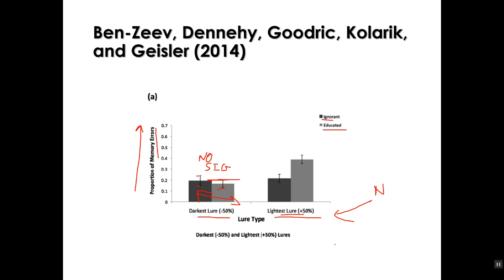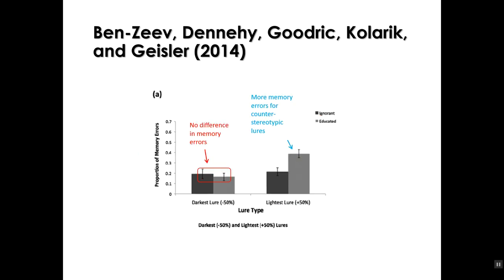However, for the lightest lures, we see that yes, indeed, there is a statistically significant difference between the subjects' errors depending on whether they received the educated or the ignorant prime. So again, this is complicated, but we're not going to get the payoff without really working hard. Let's start to break this down piece by piece.